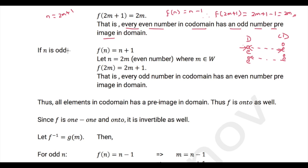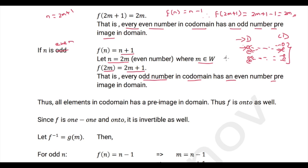If n is even, f(n) = n + 1. Since n is even, n = 2m where m belongs to whole numbers. Then f(2m) = 2m + 1. That is, every odd number in the co-domain has an even number pre-image in the domain. Thus all elements in the co-domain have a pre-image in the domain, and hence f is onto as well.